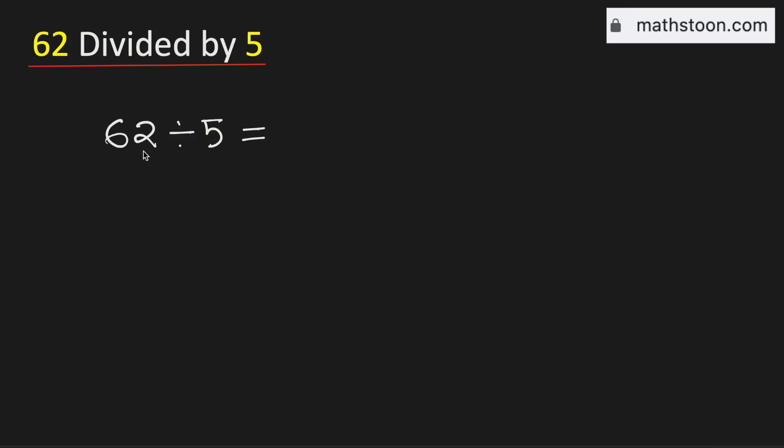In this video let us find the value of 62 divided by 5 using the long division method. Consider the first digit which is 6. 5 times 1 is 5. Now if we subtract we get 1.